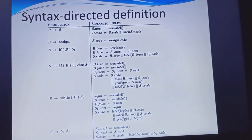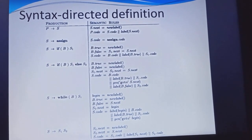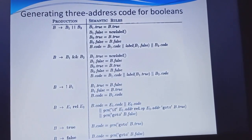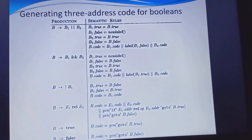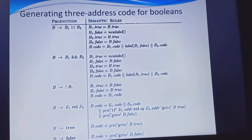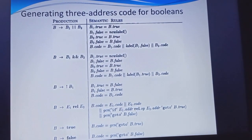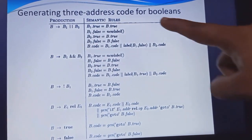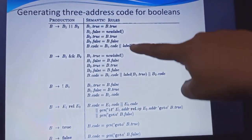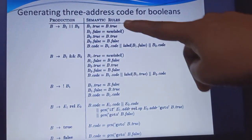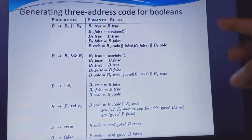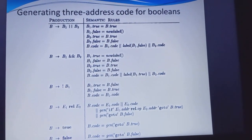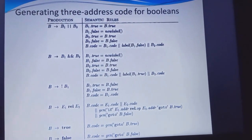This is the syntax-directed definition for these expressions. And this is generating the three-address code for the Booleans. Booleans contain only two values: either true or false.